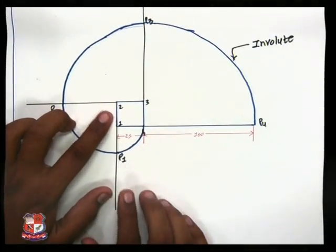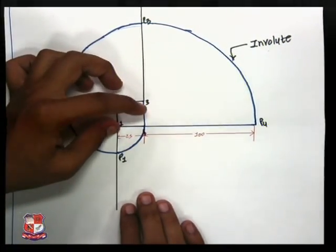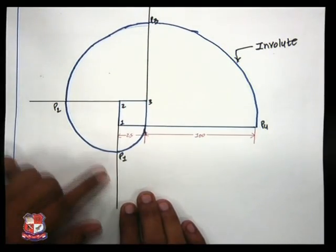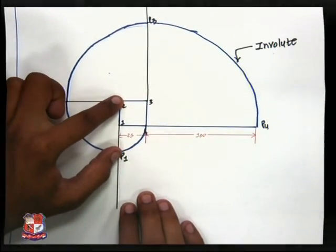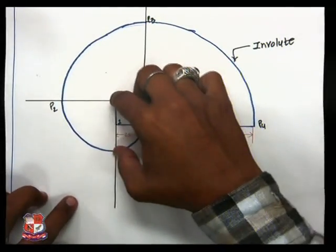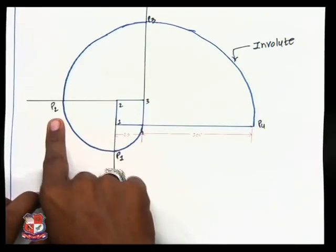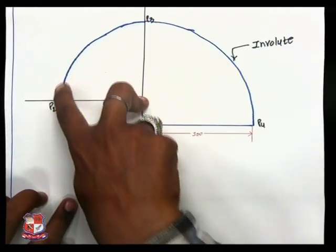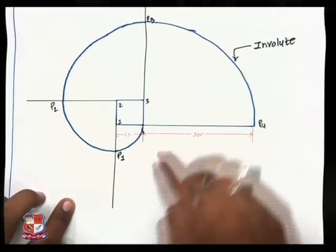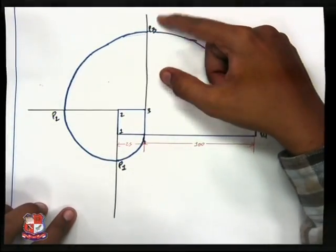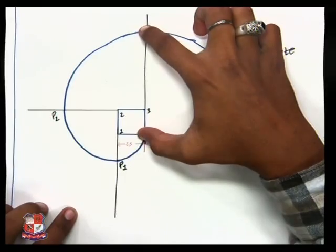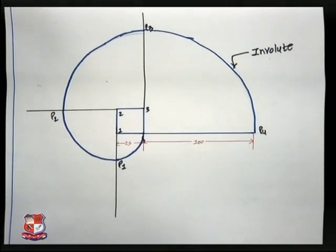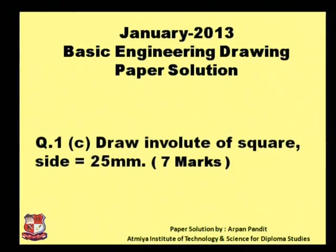So this is how you can make involute of a square. First you need to draw a square of given size, then take 1 as center, 1-4 as radius, draw the arc on 1-2 line. Now take 2 as center, 2-P1 as radius and draw an arc, name it P2. Take 3 as center, 3-P2 as radius and draw an arc, name it P3. Take 4 as center, 4-P3 as radius and draw an arc.